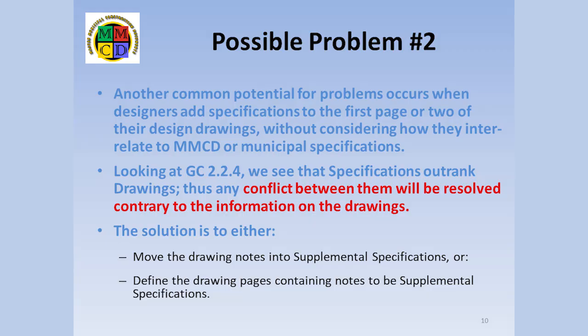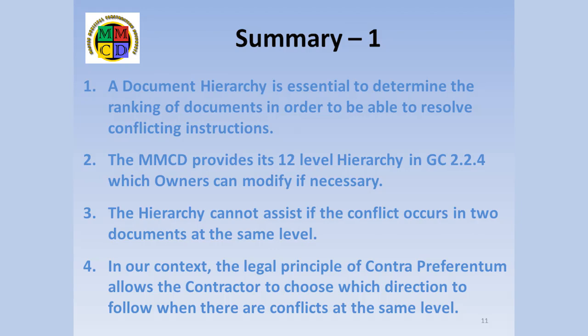There are two ways to avoid this problem. One: move all specifications on the drawings into proper supplementary specifications. Or two: define the exact pages of the drawings, including the drawing number and revision date, which contain the specifications, to be supplementary specifications and not drawings. Either solution will avoid the designer's specifications being outranked if a conflict exists.